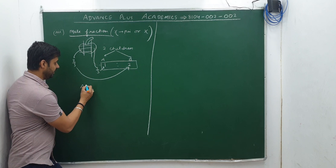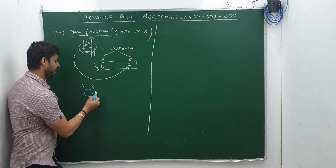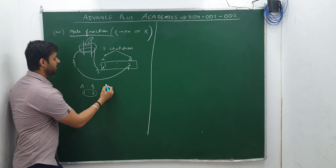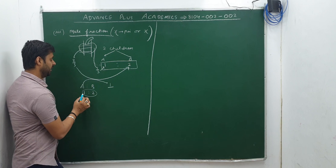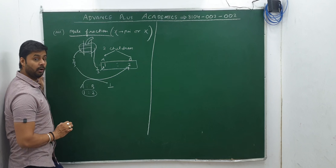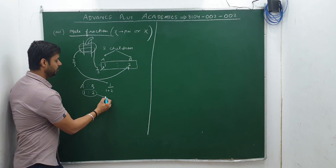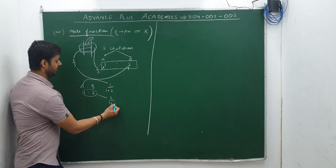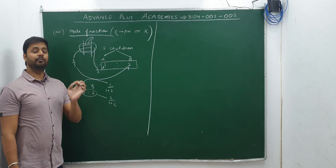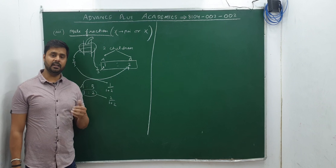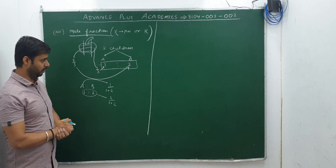The ratio is 1:2. When you convert ratio into fraction, for A you take the ratio component of A in the numerator while the sum of the ratios in the denominator — that gives 1/(1+2). In the same way for B you do 2/(1+2). So to convert ratio into fraction, the component of interest goes in the numerator and the total ratio sum goes in the denominator.